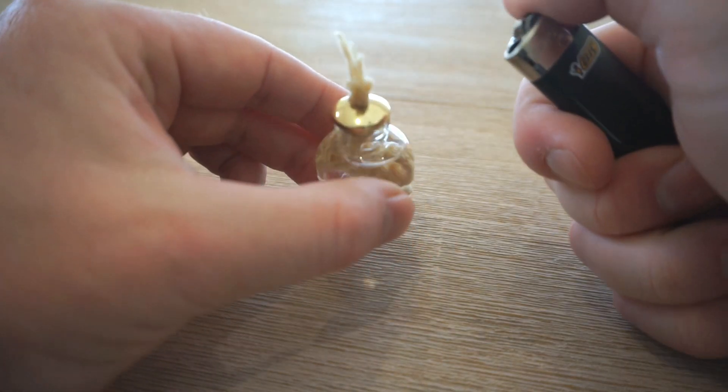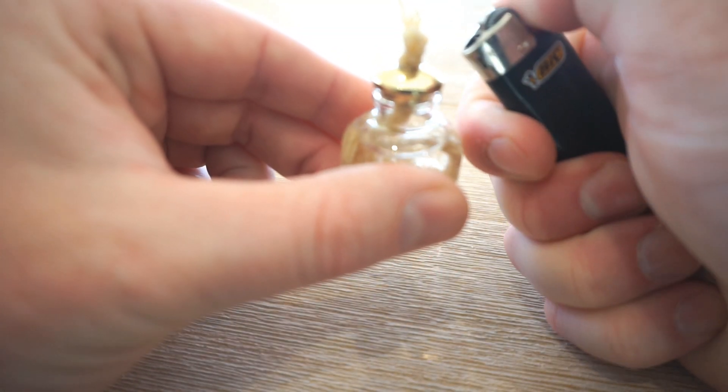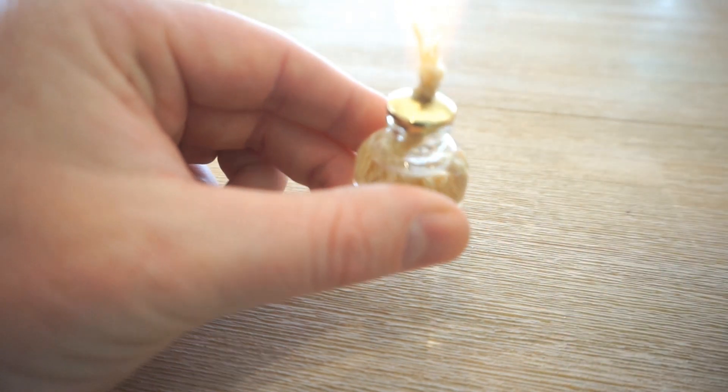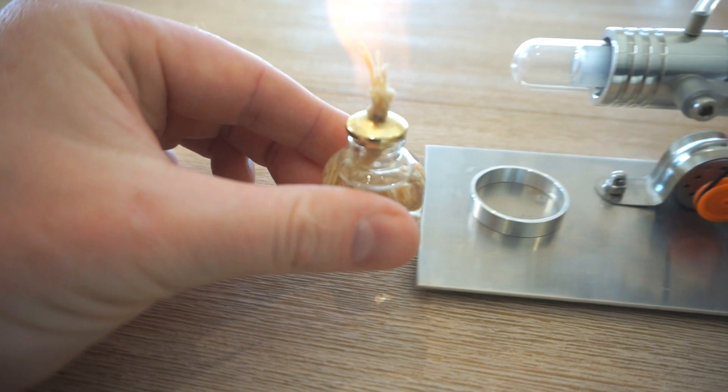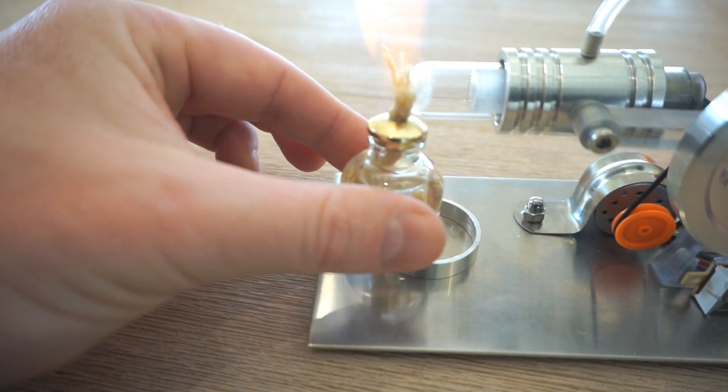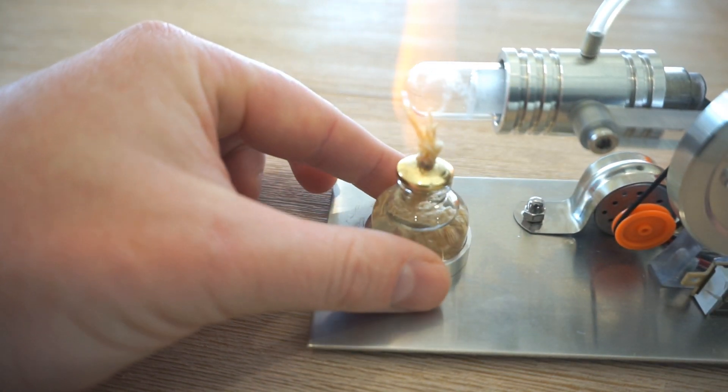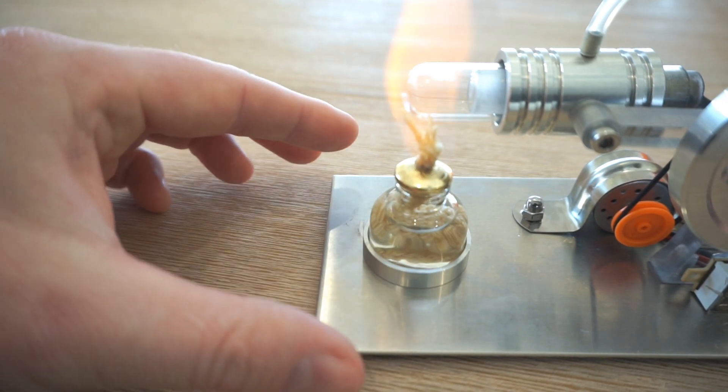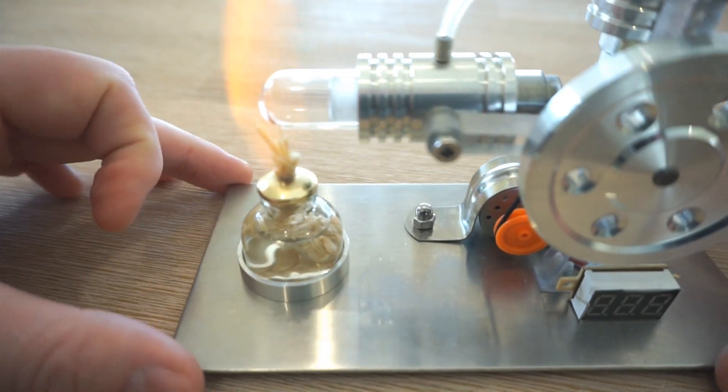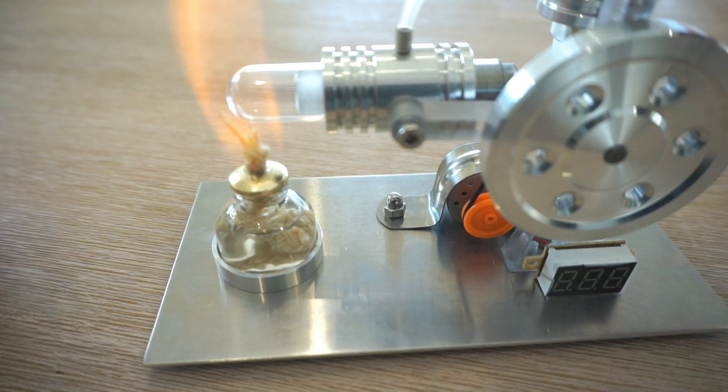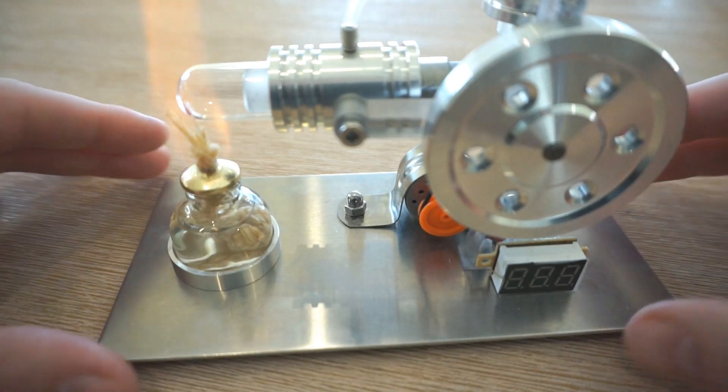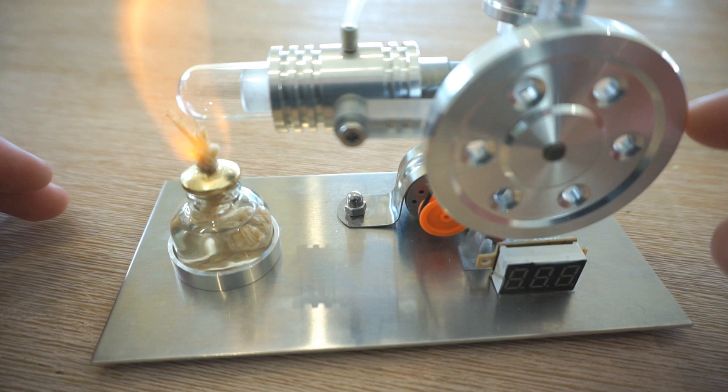Alright, let's light our lamp. The moment of truth. There we go. So that's our lamp. Let's put it underneath our heating tube in that metal ring, and that will heat up the air inside that tube quite nicely. After about 30 seconds we'll start to spin the flywheel and see what happens.